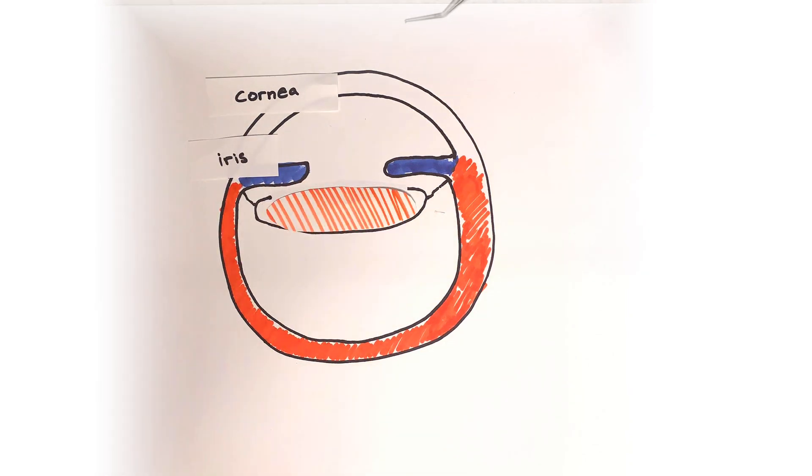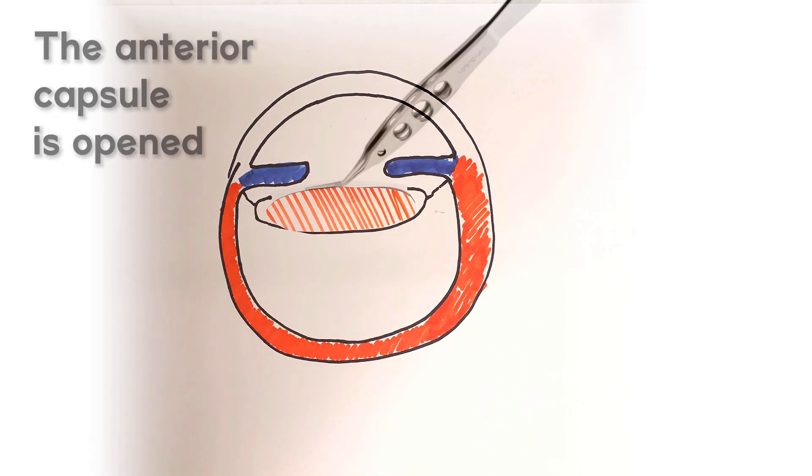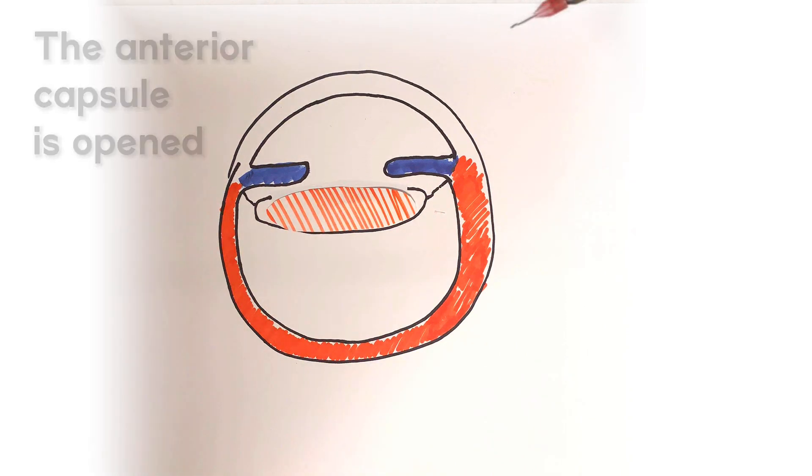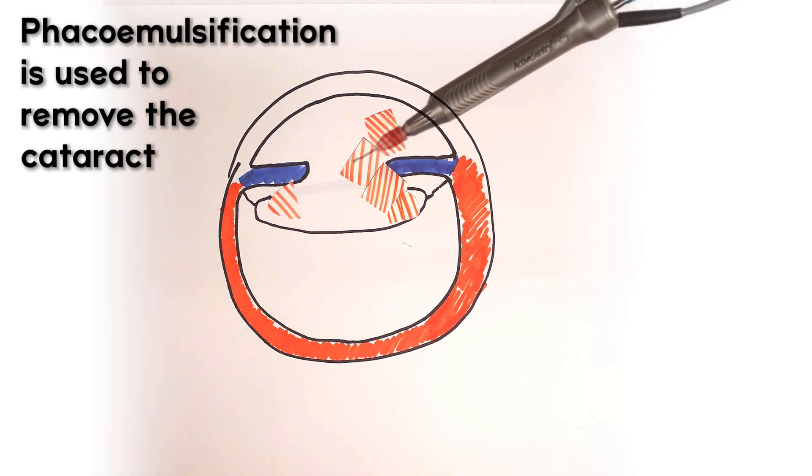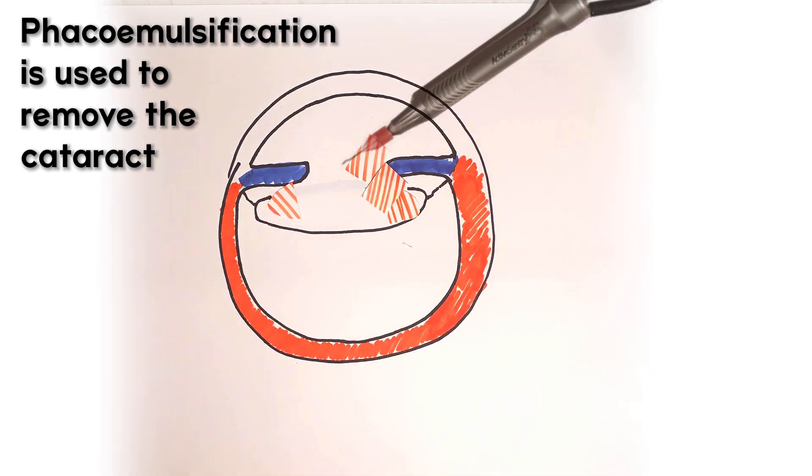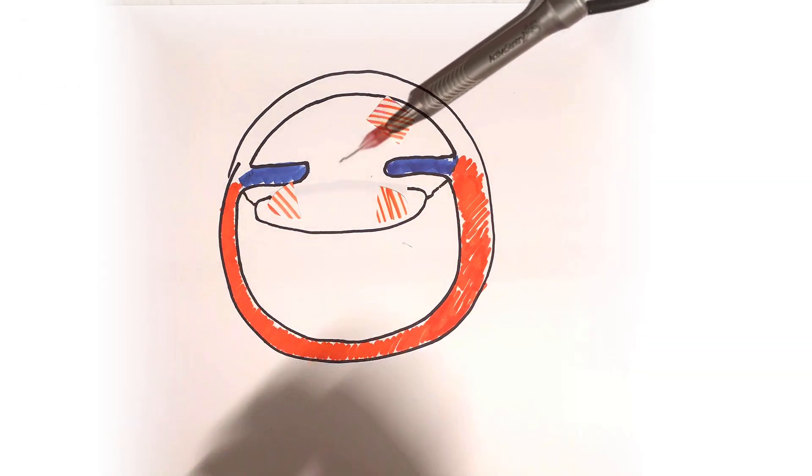We access the cataract by opening the anterior or top portion of the capsule with forceps. Next, the cataract is broken up into smaller pieces which can then be removed. There's a thin two to four micrometer posterior capsule that we leave intact during surgery.